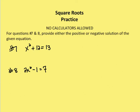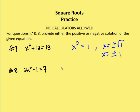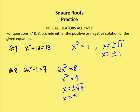For problems 7 and 8, we provide either the positive or negative solution of the given equation — we're solving for x. For the first equation, I subtract 12 from both sides to get x squared equals 1 (from 13 minus 12). So x equals plus or minus the square root of 1, which is plus or minus 1. For the second equation, I add 1 to both sides to get 2x squared equals 8, so x squared equals 4. Therefore x equals plus or minus the square root of 4, or plus or minus 2.